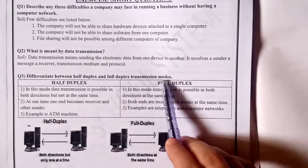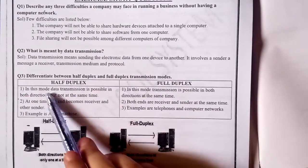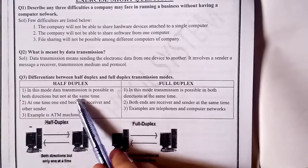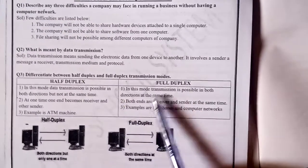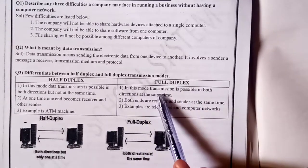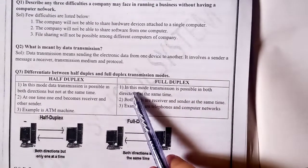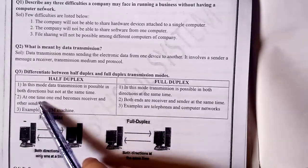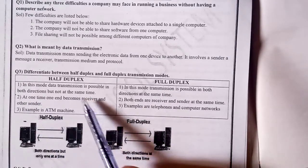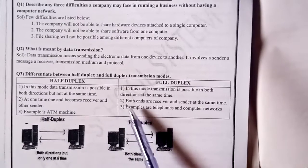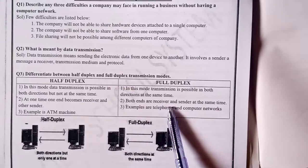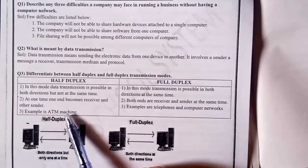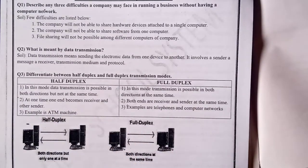Next question: Differentiate between half duplex and full duplex transmission mode. Half duplex: In this mode, data transmission is possible in both directions but not at the same time. Full duplex: In this mode, transmission is possible in both directions at the same time. At one time, one end becomes the receiver and the other the sender, while in full duplex both ends are receiver and sender at the same time. An example is an ATM machine.